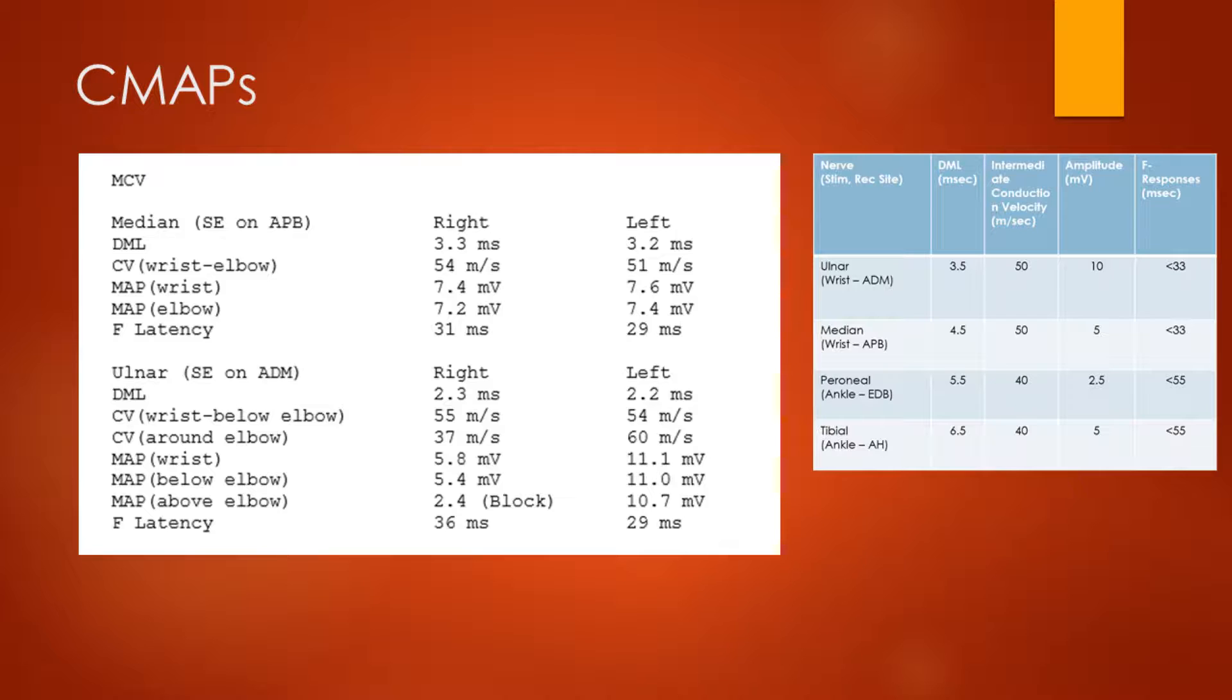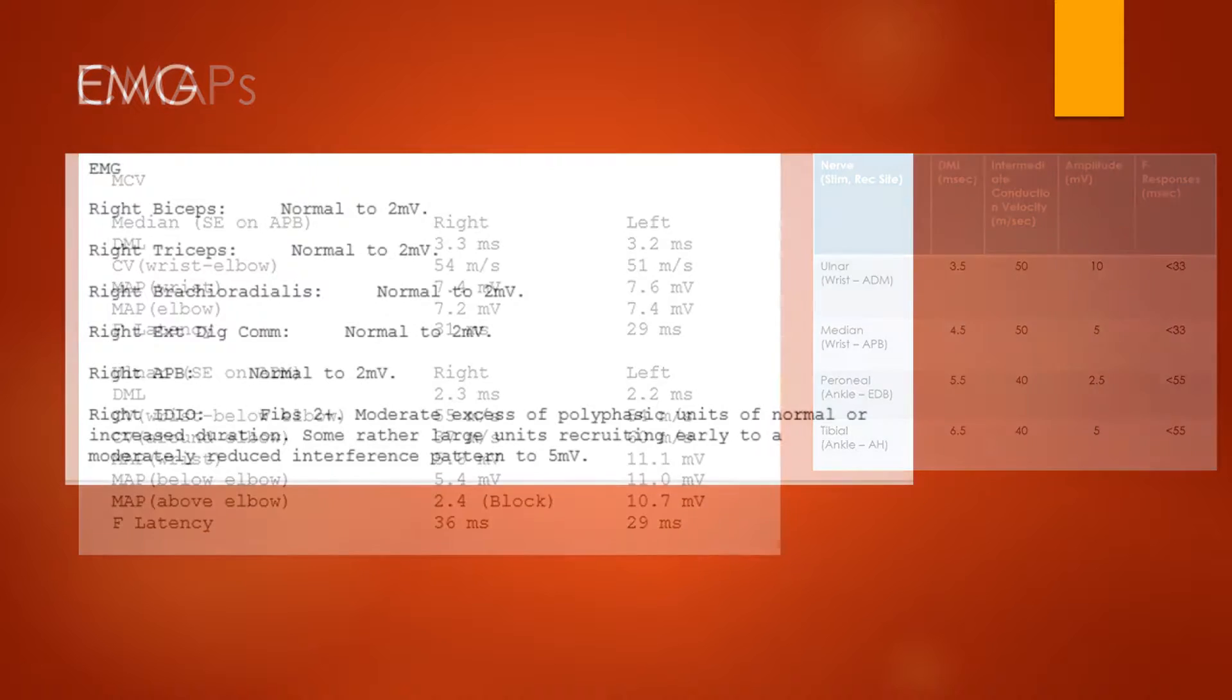We can also compare the motor amplitudes, the MAPs, the C-MAPs. And on the right side, these are reduced. It's 5.8 millivolts compared to 11 or so millivolts on the left hand side. And when we stimulate above the elbow, it's only 2.4 millivolts, and so there's some conduction block over there too. If we also have a look at the F-wave latencies, we can see that on the right side it's slow compared to the left. It's 36 milliseconds versus 29. So what we can see from the C-MAP studies, the motor velocities, is that there is focal slowing of the ulnar nerve across the elbow, and there's prolongation of the F-latency too.